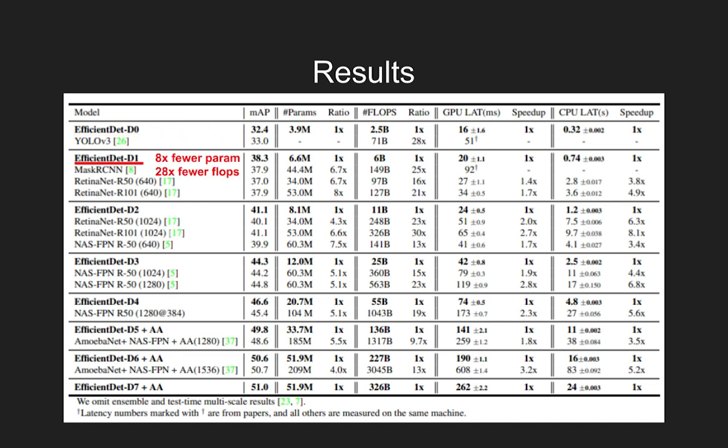Also, compared to RetinaNet and Mask RCNN, EfficientDet D1 achieves similar accuracy with up to 8 times fewer parameters and 25 times fewer flops. The link to the paper and some useful resources will be provided in the description. That's all for today, and I'll see you next time with a new paper.